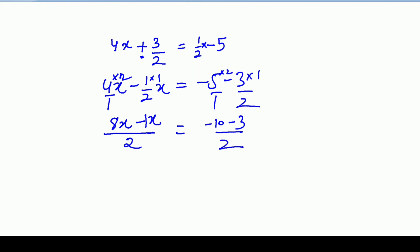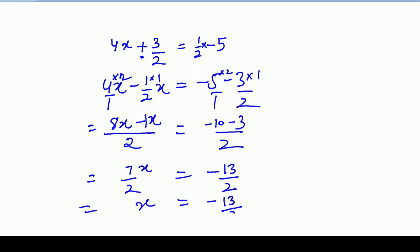Is tarhe se isko karna hai. Ab 8x minus 1x = 7x by 2. Aur yaha par minus minus plus hota hai, lekin sign minus ka rehta hai: minus 13 by 2. Ab x ki value nikalne ke liye idhar saamne le jayenge — divide hoga lekin sign lagayenge multiply ka, aur isko ulta karte hai: 2 by 7. 2 se 2 cancel ho gya, aur minus 13 by 7 is your answer.